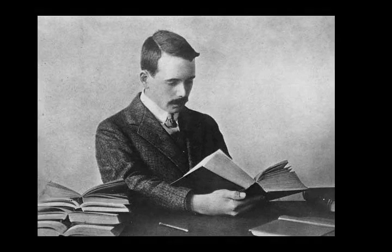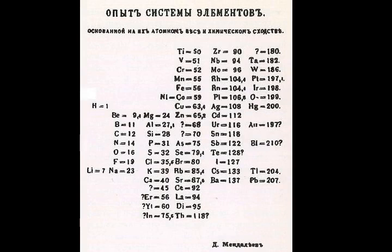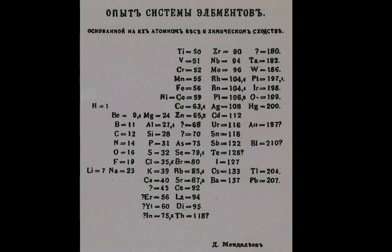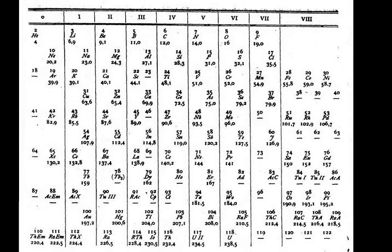Starting from element 11, sodium, there is no more space in the second shell, which from here on is a core shell just like the first. Thus the eleventh electron enters the 3s orbital instead. The 1s² 2s² 2p⁶ core is abbreviated, as it is identical to the electron configuration of neon; thus sodium's configuration is written [Ne] 3s¹. Magnesium, 3s², finishes this 3s orbital, and from then on the six elements aluminium, silicon, phosphorus, sulfur, chlorine, and argon fill the 3p orbitals, 3s² 3p¹ through 3s² 3p⁶.